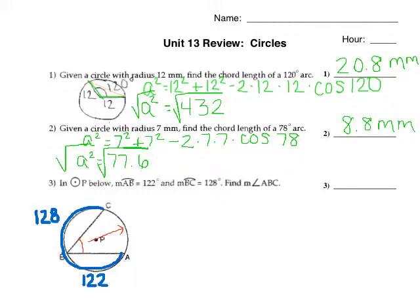Let's look at number 3. In number 3, it gives me that arc AB, so that would be from A to B on the outside of the circle, is 122. And arc BC is 128. And I'm looking for this angle here. Well, that angle, I could find if I knew what this arc was. And I can get that arc, because I know that the whole circle is 360, and I have 122 and 128.